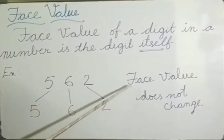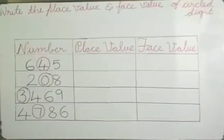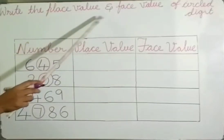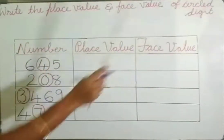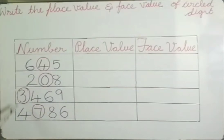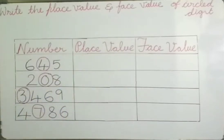Face value does not change. Now, write the place value and face value for the circled digit. Some digits in the numbers are circled, and we have to find the place value and face value for those digits.